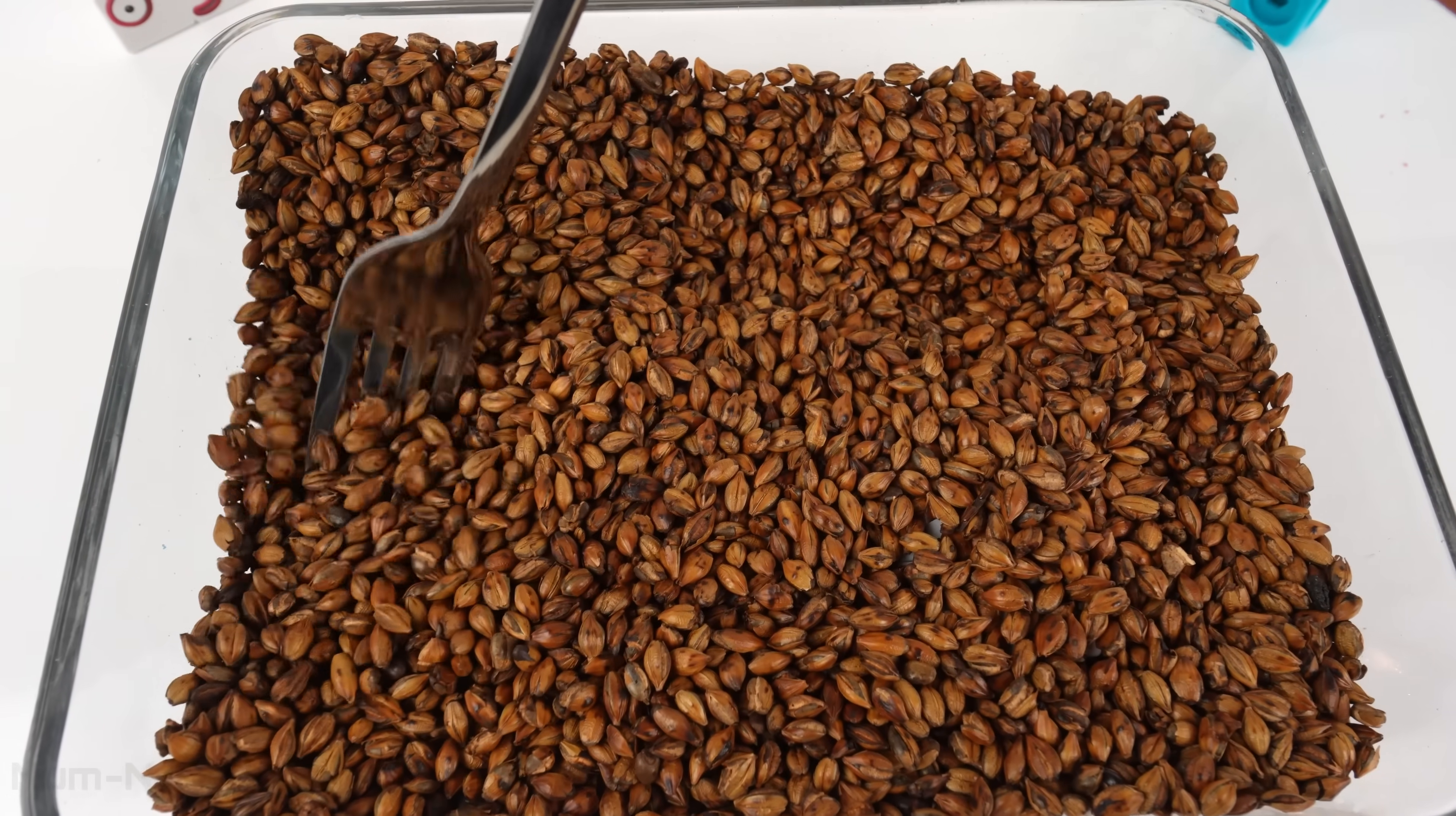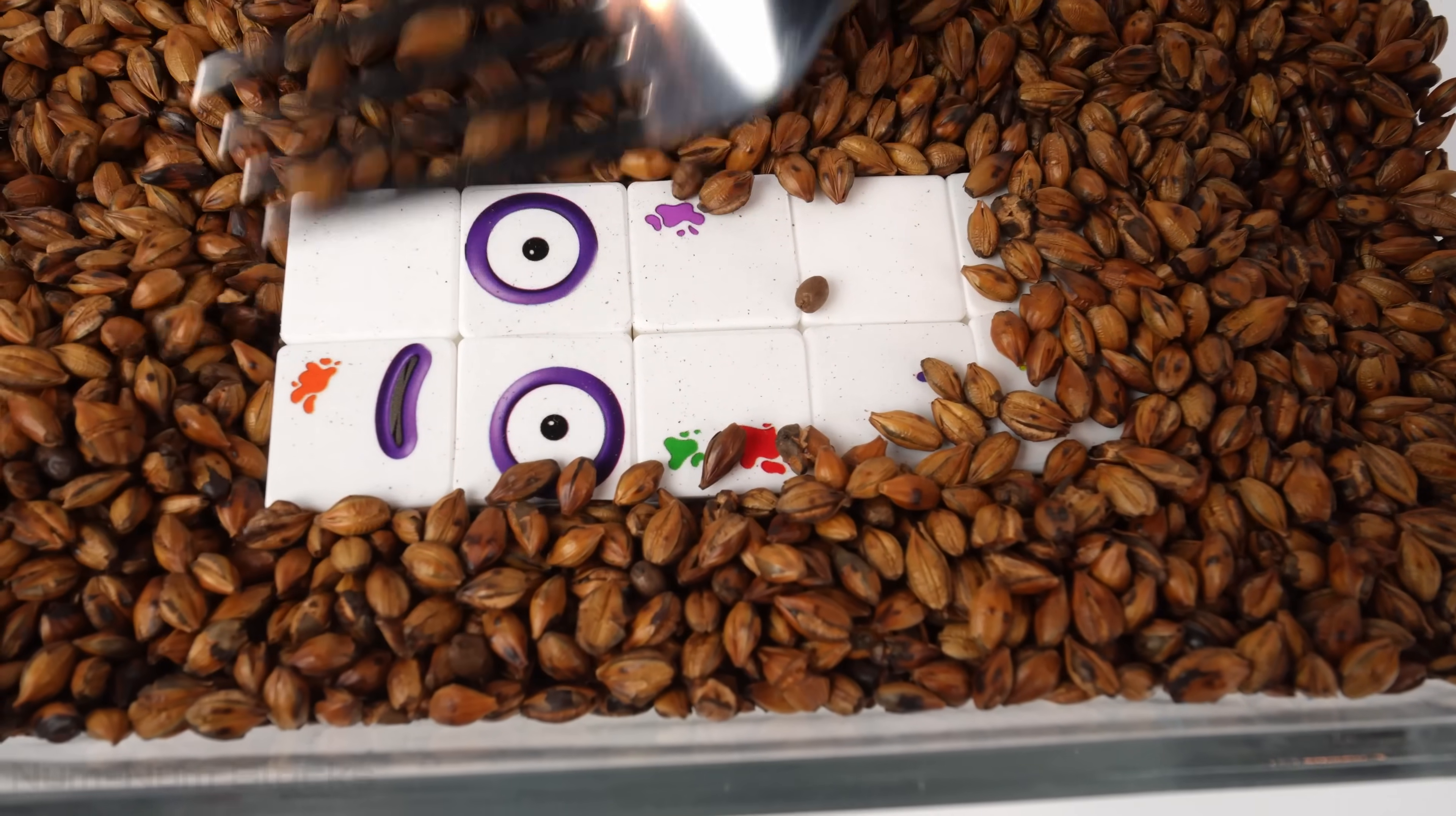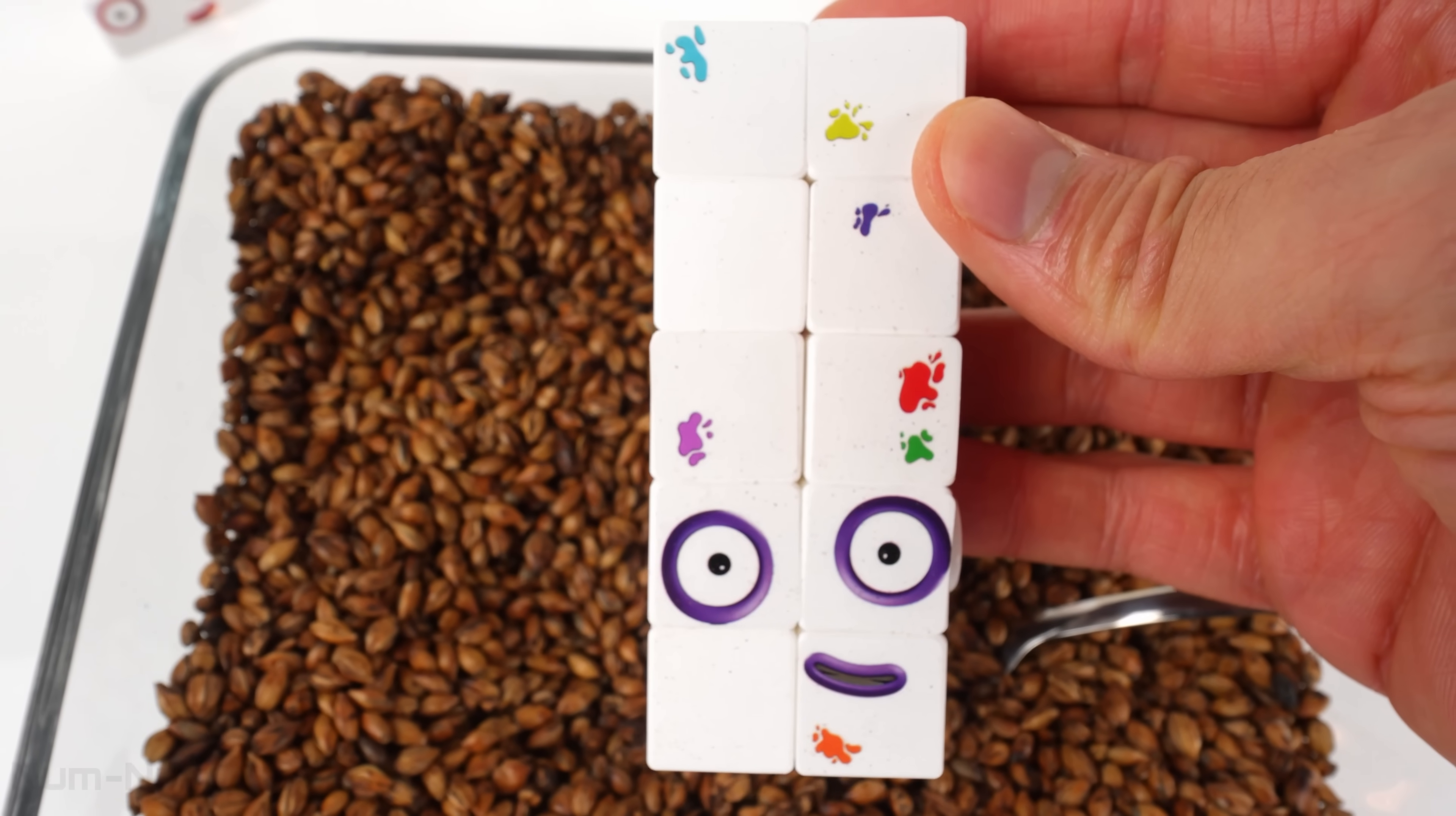Let's continue our search for more number blocks. Let's try poking. I found something. More white blocks. A face! This number block is covered with paint. I think this number block is also missing its colors. This is supposed to be 17.